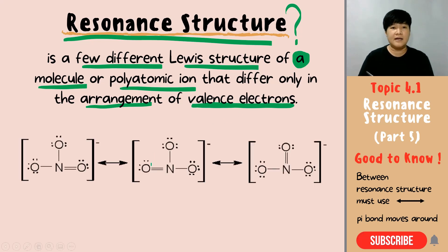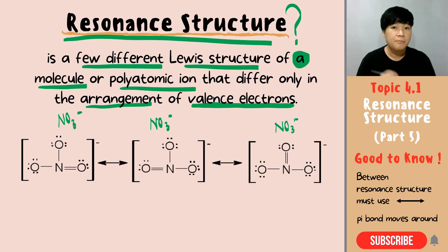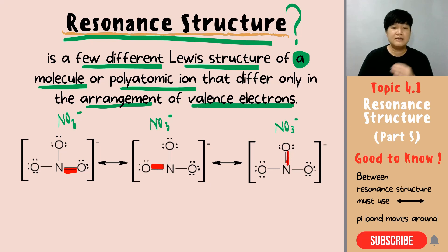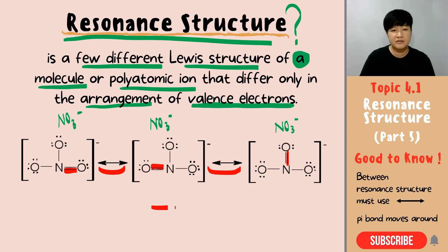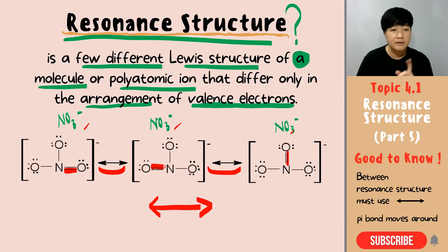For example, here are Lewis structures of NO3⁻. They are all the same polyatomic ion, NO3⁻. The only difference is the movement of the pi bond. So it's actually the movement of your valence electrons that makes them different. Since they are equal to each other, the arrow you must use between resonance structures must be a double-headed arrow, because all of them are the same molecule differing only in the arrangement of valence electrons.